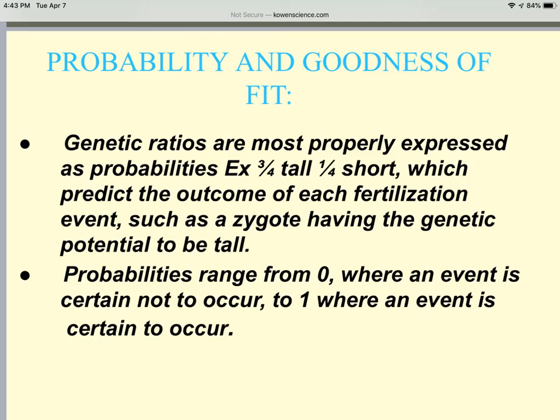In this video, we will be looking at probability and goodness of fit and how to use this while approaching various genetic problems. When we deal with probability and goodness of fit, genetic ratios are most properly expressed as probability. For example, you may have three-fourths tall, one-fourth short, which is a predicted outcome of each fertilization, not that if you have four offspring, three-fourths will be tall and one-fourth will be short. It's with each offspring.